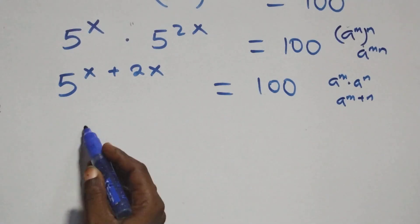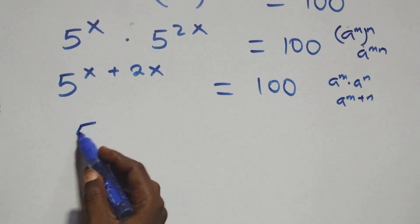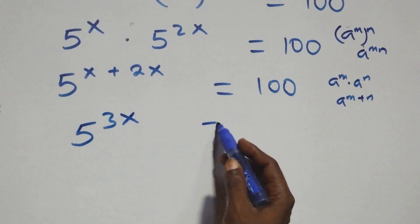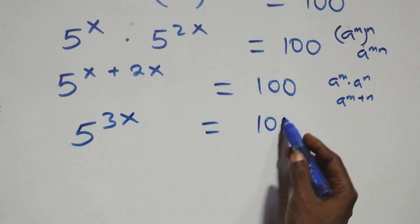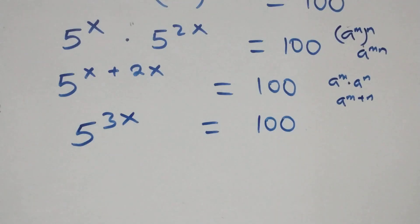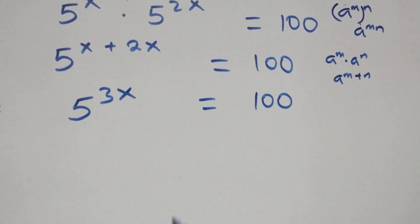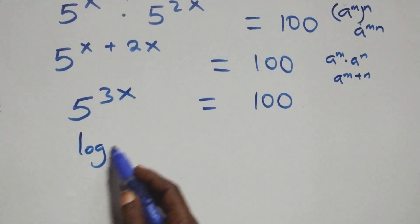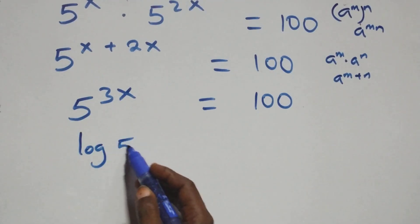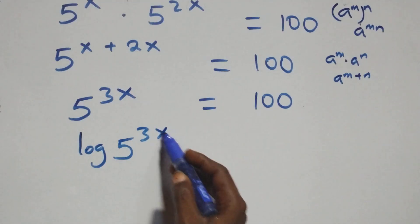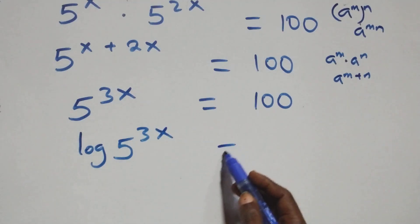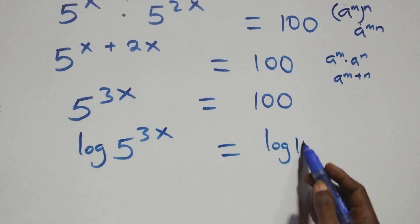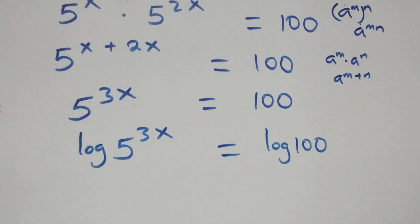Then this becomes 5 raised to power 3x equals 100 on this side. Then here we take the log on both sides, so we have log of 5 raised to power 3x equals log of 100 on this side.